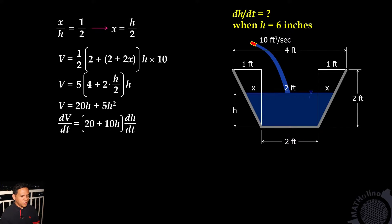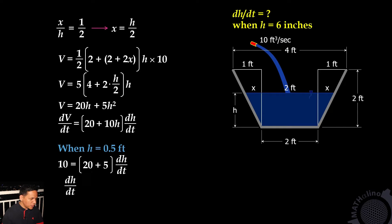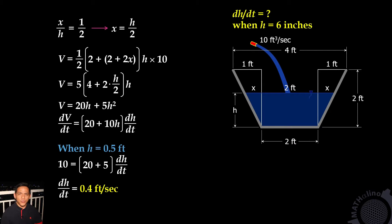We are required to find dh/dt when the depth is 6 inches. Take note that dV/dt is equal to 10 cubic feet per second. When h is equal to 6 inches or 0.5 foot, we have 10 is equal to (20 + 10×0.5) times dh/dt. Therefore, dh/dt is equal to 0.4 foot per second. That is our answer using the conventional approach.